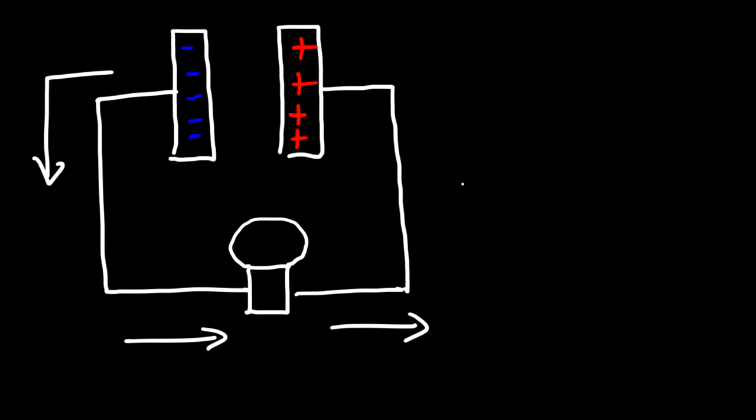Now let's connect this capacitor to a light bulb. That's a terrible looking light bulb. Let's do that again. Now in this circuit the electrons will flow from the negatively charged plate through the light bulb to the positively charged plate because opposites attract. And it's going to do so until the two metal plates are neutralized.